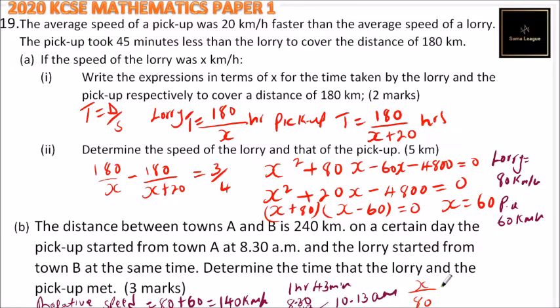x over 80 is equals to the time the lorry took to cover x distance, which is the same as 240, the total distance, minus x.